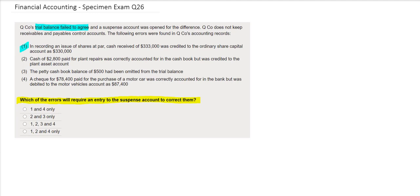Looking at the first error, they tell us that in recording an issue of shares at par, cash received of $333,000 was credited to the ordinary share capital account as $330,000. We therefore have a difference on our share capital account. What should be there is $333,000 but what's been posted is $330,000 and so we have a difference of $3,000.